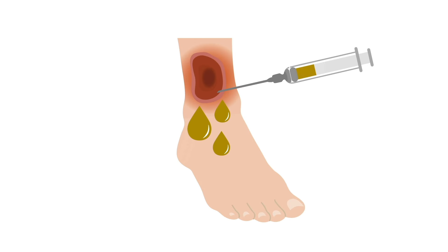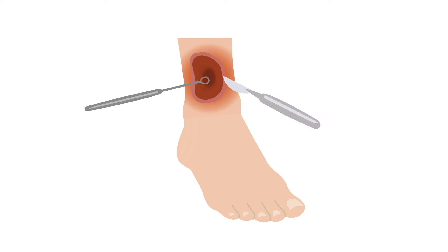Additionally, infected fluid from the wound can be sent to the lab using a technique called needle aspiration. Tissue cultures obtained by sharp debridement or biopsy are usually more accurate, as they are from deeper areas of the wound. This gives better identification of the organisms causing the infection versus surface organisms alone.